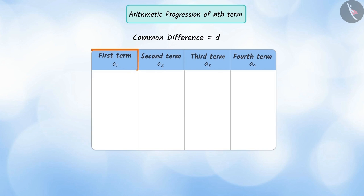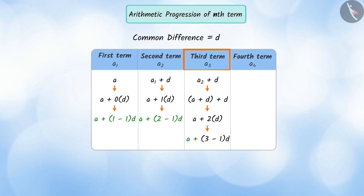Here, first term A1 can be written as a plus (1 minus 1) multiplied by d. The second term A2 as a plus (2 minus 1) multiplied by d. The third term A3 as a plus (3 minus 1) multiplied by d. And the fourth term A4 can be written as a plus (4 minus 1) multiplied by d.